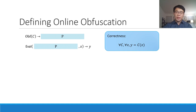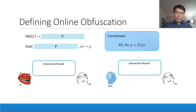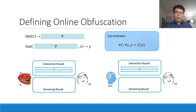To define security, we consider two different experiments. In the first, the challenger interacts with an adversary; in the second, with a simulator. Both experiments consist of an arbitrary number of rounds, and in each round either an interaction round or a streaming round happens. In interaction rounds — the same for both experiments — the challenger interacts with the adversary or simulator arbitrarily, with no limitation on communication. In a streaming round for the adversary-challenger game, the adversary gets a fresh stream of an obfuscated program P, and the challenger is notified. However, the simulator doesn't have access to the stream, but instead is allowed to make adaptive queries to the original circuit C, bounded to a total of poly(λ) queries.